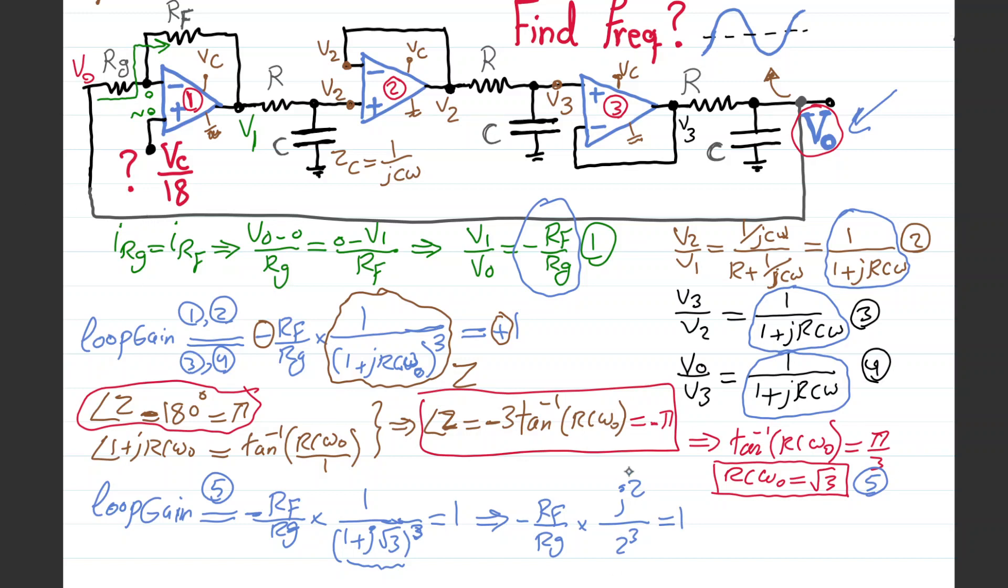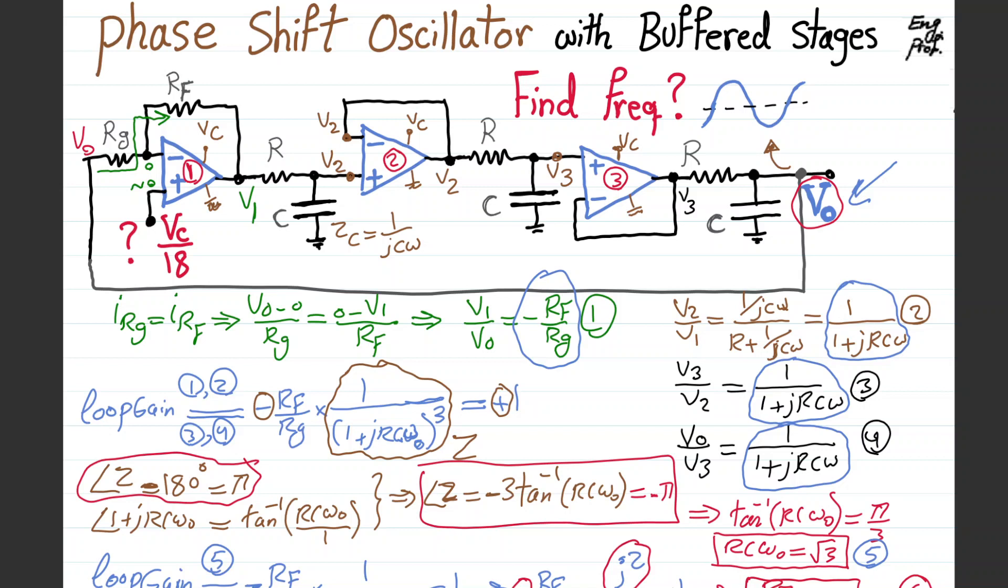The nice thing is j squared generates negative 1 for us, which cancels out this 1. As a result, we get what we exactly wanted. So Rf over Rg should equal 8. That's the required gain in the loop as a condition of oscillation so that we enforce the loop gain is 1. We have 5 and 6. We found the answer in terms of gain. Rf over Rg should be 8 for the first stage, and omega naught should be root 3 divided by RC. So f of oscillation or f0 is root 3 divided by 2 pi RC, because f naught is omega naught divided by 2 pi. That's from equation number 5.